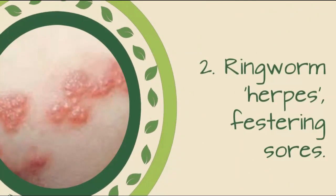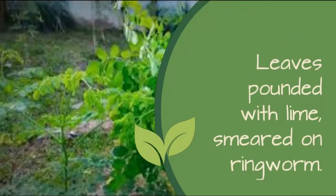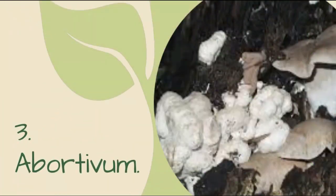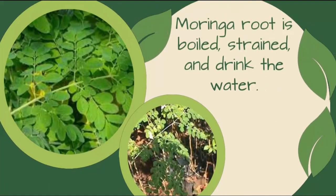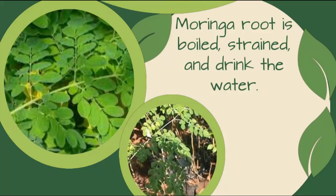2. Ringworm, Herpes, Festering Sores: Leaves pounded with lime, smeared on ringworm. 3. Abortifacient: Moringa root is boiled, strained, and drink the water.